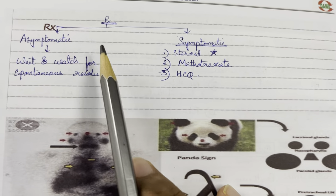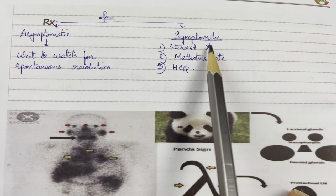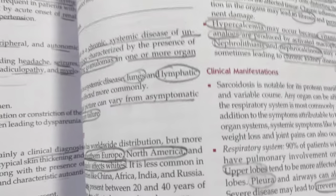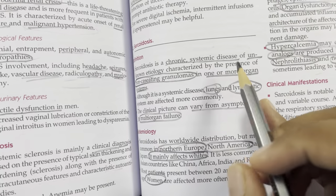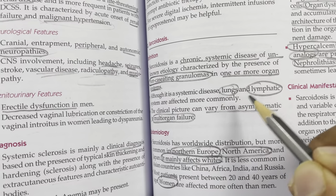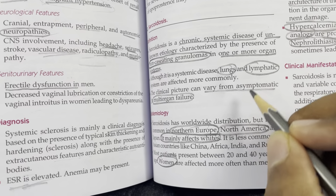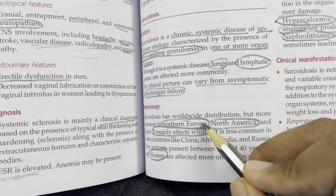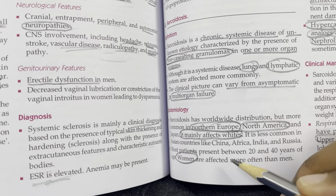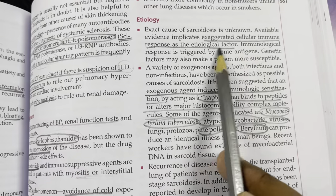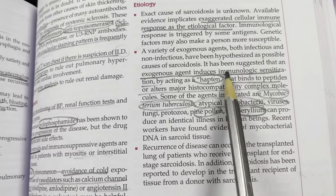Treatment of sarcoidosis: asymptomatic patients — wait and watch; symptomatic patients — steroids, then methotrexate and hydroxychloroquine. Sarcoidosis is a chronic systemic disease of unknown etiology with non-caseating granulomas predominantly affecting lungs and lymphatics. It can range from asymptomatic to multi-organ failure. Mostly affects white people in northern Europe, North America, and Japan; women are more affected.